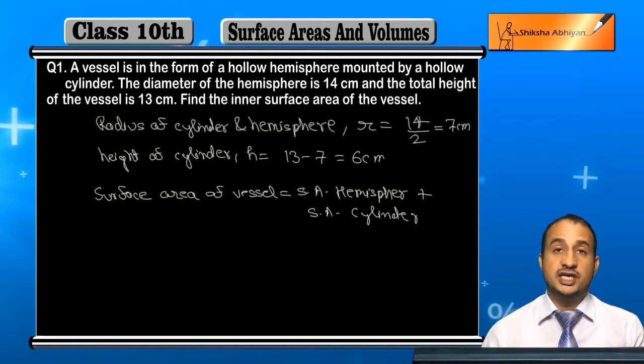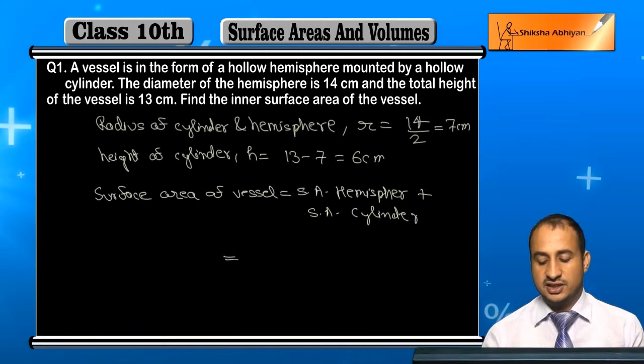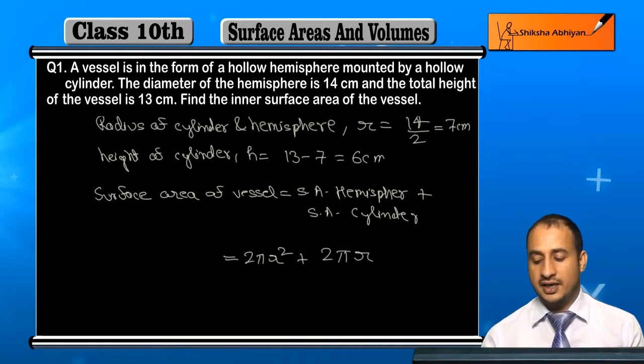So what is the surface area of hemisphere? This is equal to 2πr². And what is the surface area of cylinder? 2πrh. Here you take 2π common.